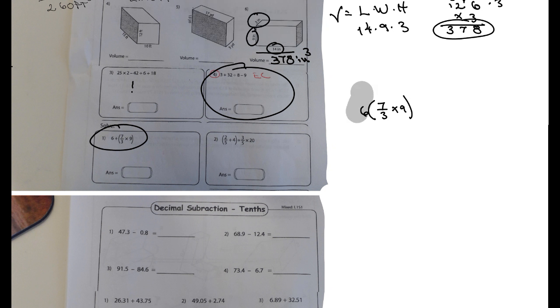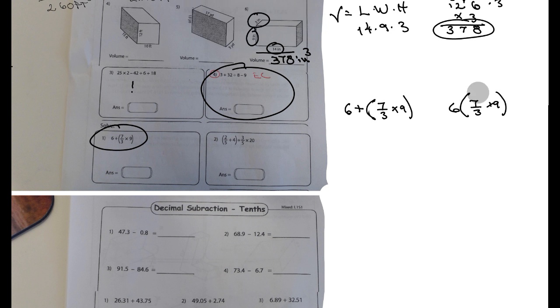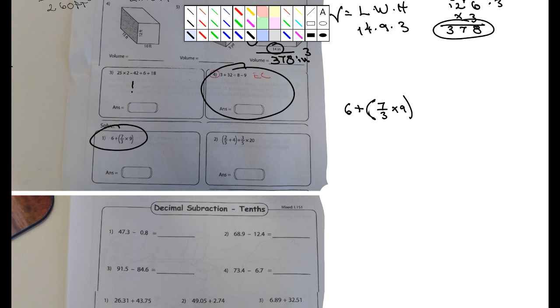The way that's written, if it was six and then I had the parentheses seven over three times nine, that would be six times whatever's in there. But you guys won't have to worry about that for a couple years anyway. So it's six plus. First thing you want to do is what's in the parentheses, right? PEMDAS.